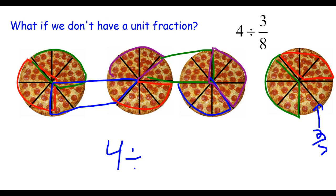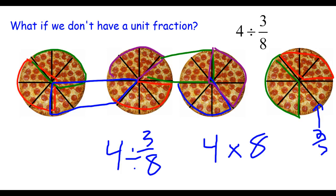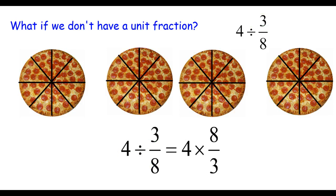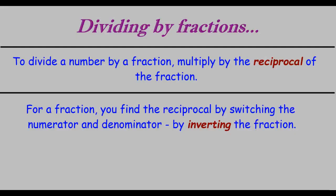Looking at it mathematically: four divided by three-eighths. Each of the four pizzas contains eight-eighths, so the total number of eighths is four times eight. Splitting them into groups of three means dividing by three. So four divided by three-eighths becomes four times eight-thirds. That is the process for dividing by fractions: to divide a number by a fraction, you multiply by the reciprocal of the divisor — found by inverting the fraction, switching numerator and denominator. Pause the video and write down these two key points.